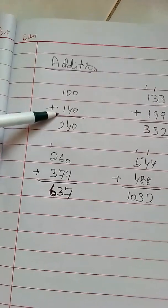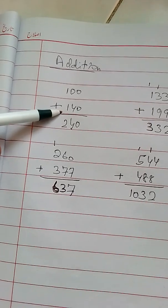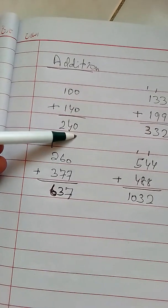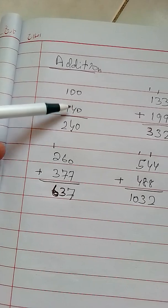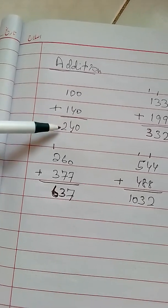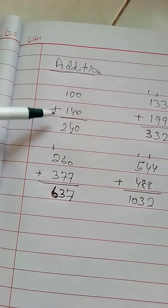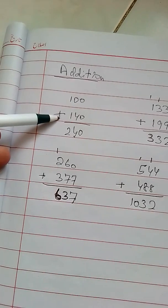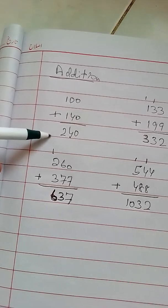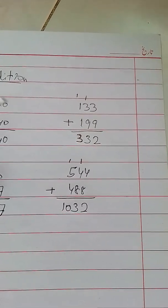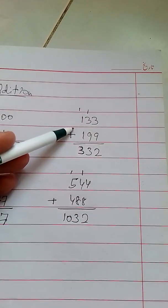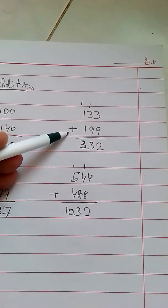100 plus 140. So here 0 plus 0 is 0. 0 plus 4 is 4. 1 plus 1 equals 2. So 100 plus 140 equals 240 is the answer.